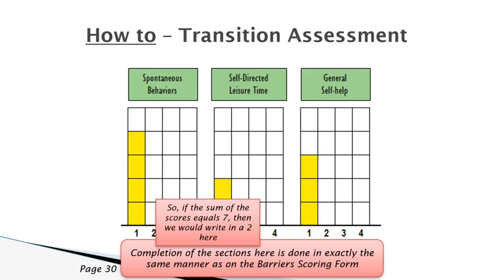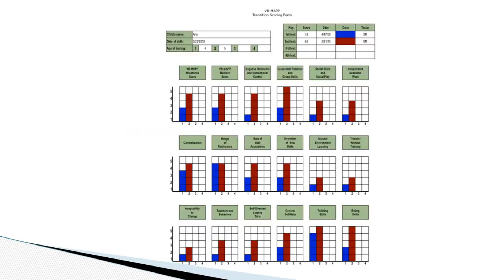However, some items such as number 13, adaptability to change, may require additional consideration. You are looking for the criteria that best fits the student's typical daily behavior. If a student seems to fall between two scores, score lower. We want to make sure that we have prepared the student for success across skill sets before moving on to a less restrictive environment.